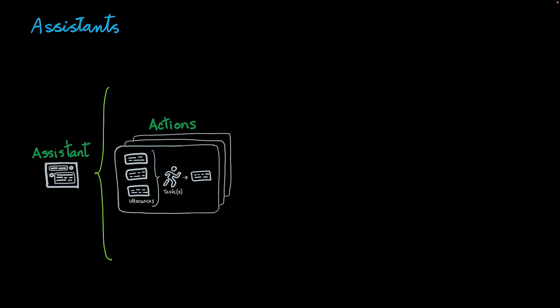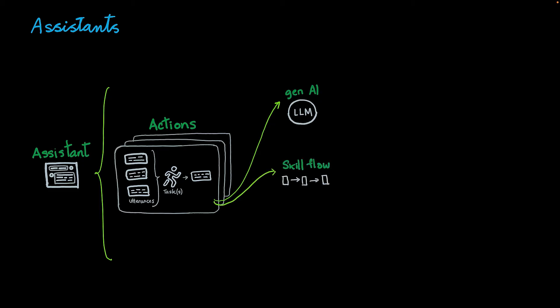What are the types of tasks that an action can invoke? An action can connect to an LLM and use native AI to implement RAG experiences. So you can set up your LLM, create your prompts, and the LLM will take care of understanding the question and coming back with the appropriate answer. You can also invoke a skill flow as a task. Actions can trigger these skill flows that you've created in the automation framework as complex sequences of steps.